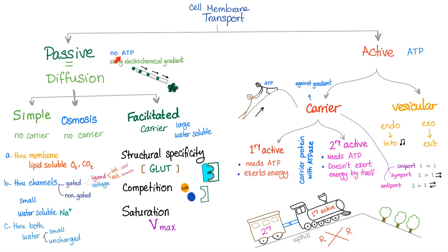Simple diffusion: no ATP and no carrier. Osmosis is a special type of simple diffusion, specifically for water — no carrier, no ATP. Facilitated diffusion, however, requires a carrier, but it does not require ATP.